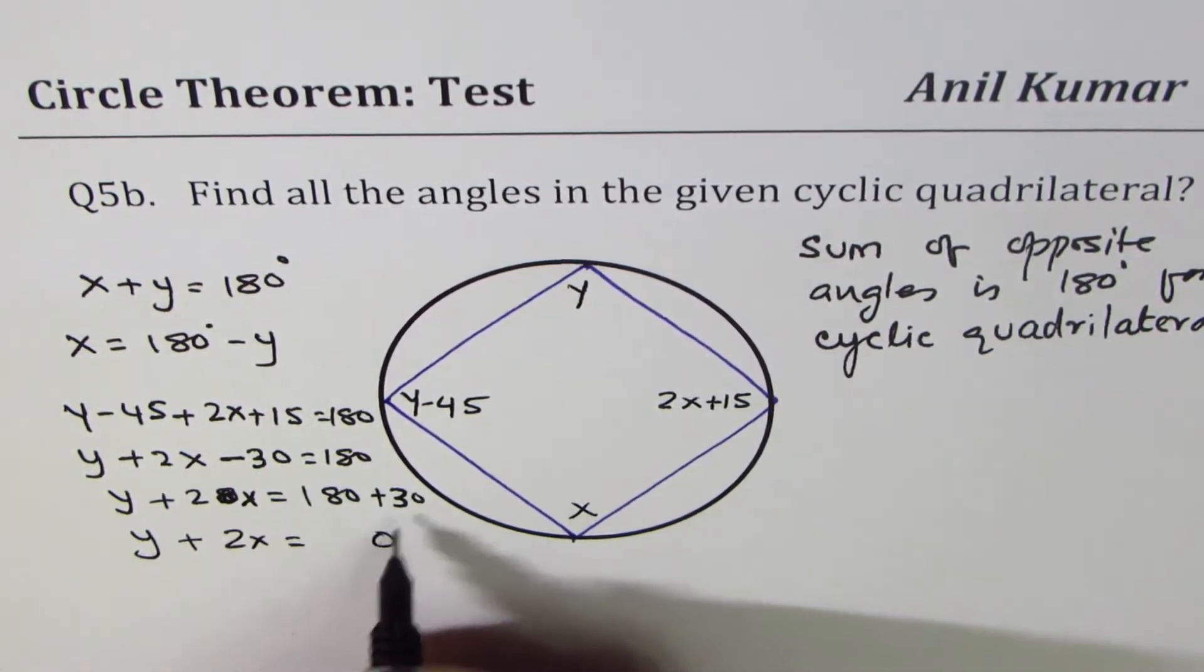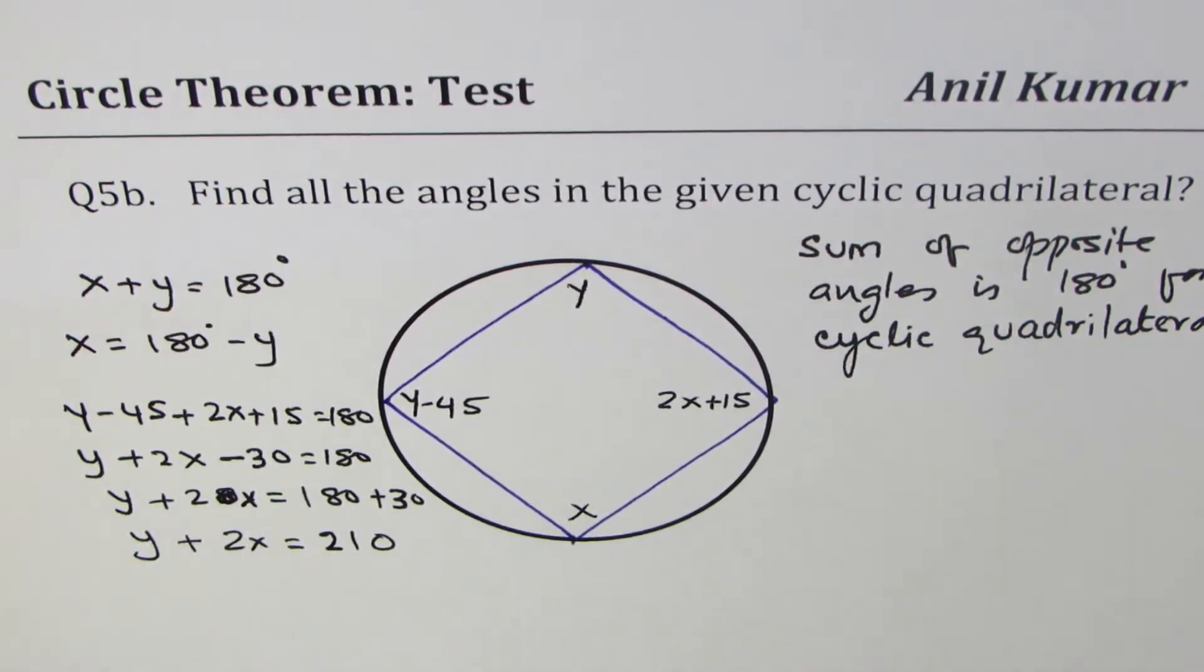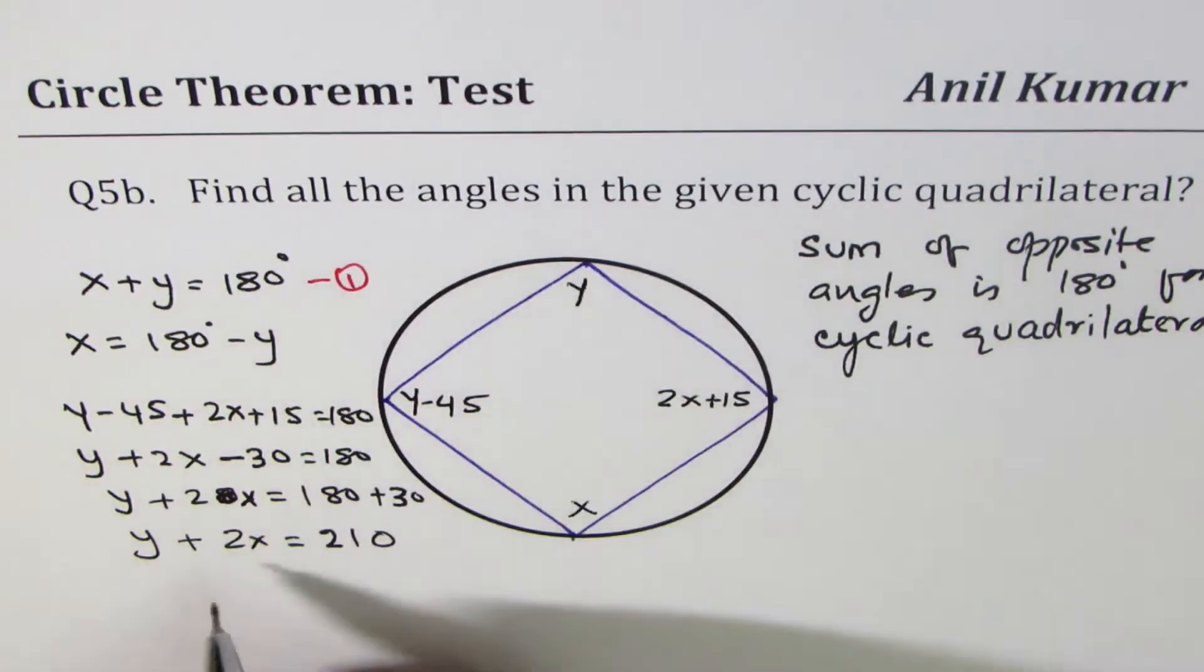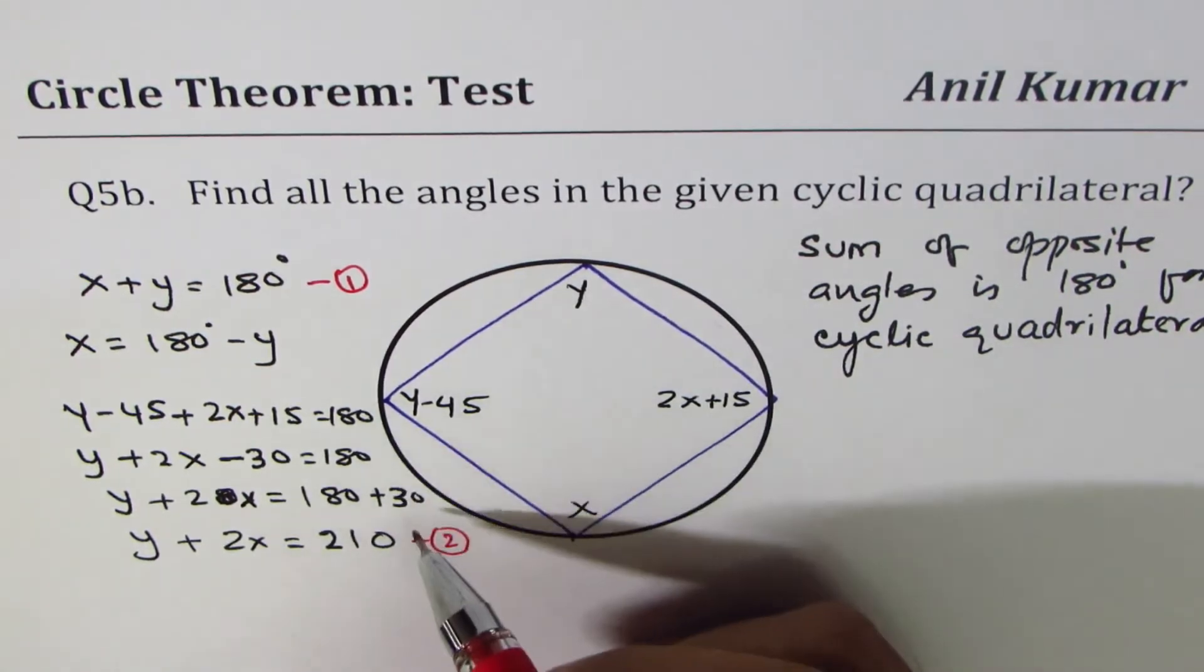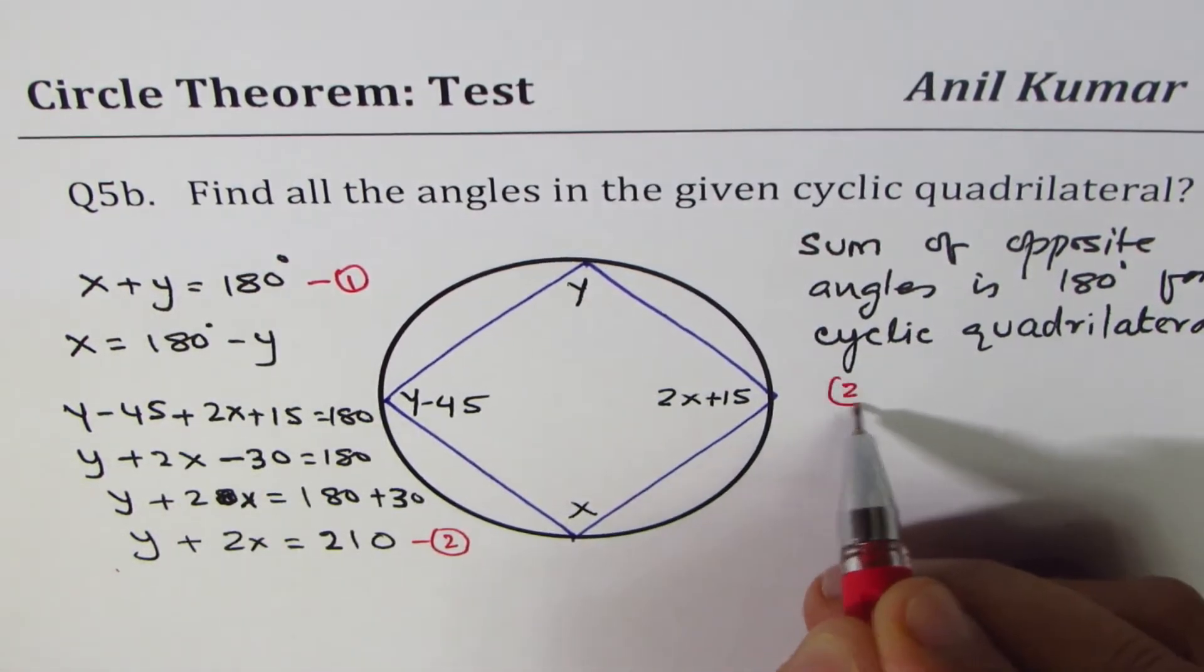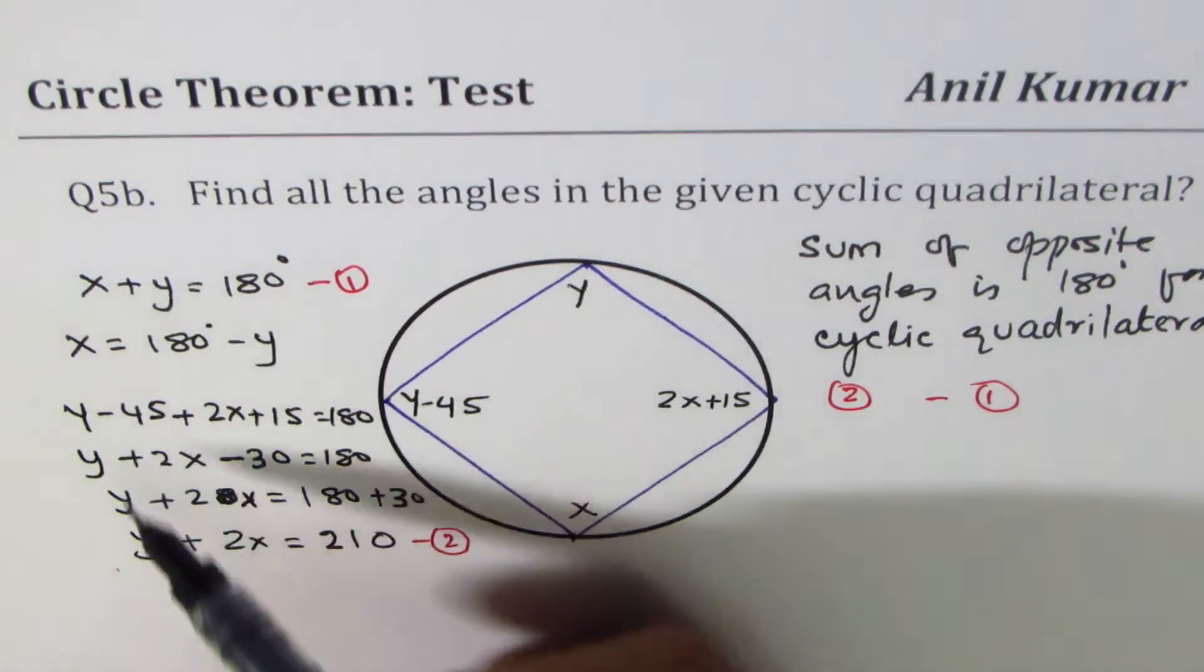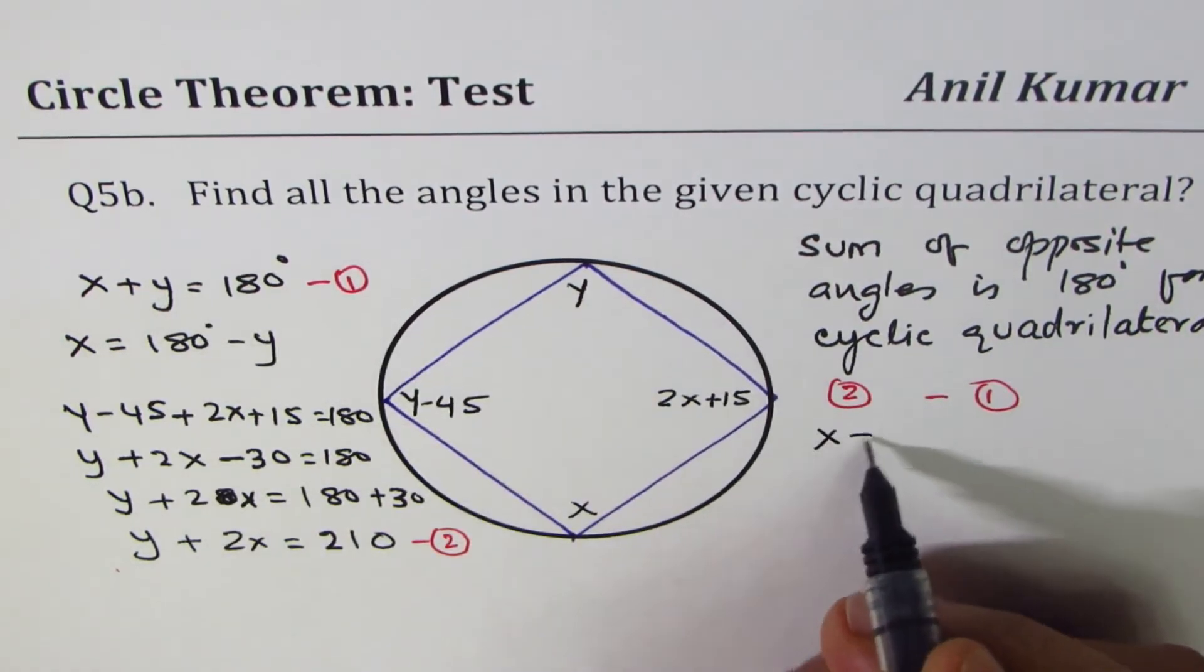We can solve this question by elimination as I found it's easier that way. This is equation 1, this is equation 2. Since we have y with same coefficient, we'll do equation 2 take away equation 1. So y minus y is 0, 2x minus x is x.